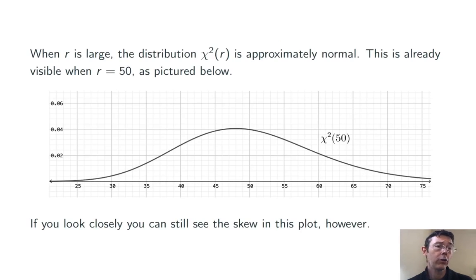When r is large, the distribution of χ²(r) is approximately normal. That is, the graph is going to have a bell shape. Here, I've drawn a graph of χ²(50). You can already see that bell shape to one degree or another, but if you look close, you can still see that right skew.